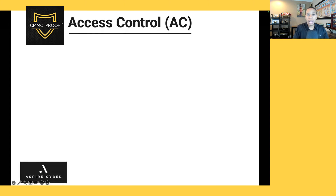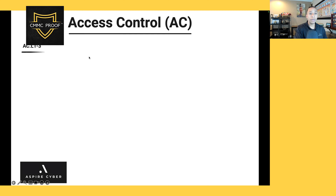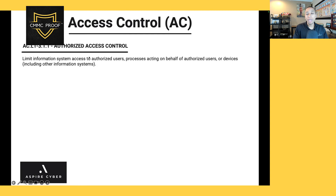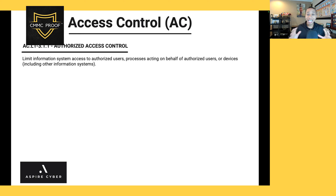We are in the access control family. There are 14 families for the entire NIST SP800-171 series, and for CMMC Level 1 there are four families. We're going to start with 3.1.1, the authorized access control: limit information system access to authorized users, processes acting on behalf of authorized users, or devices, including other information systems.